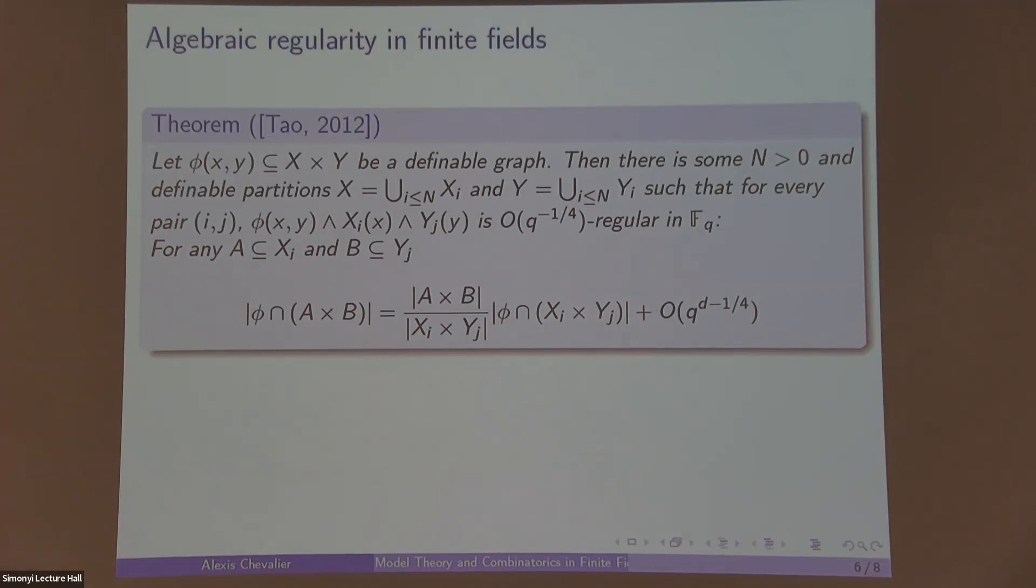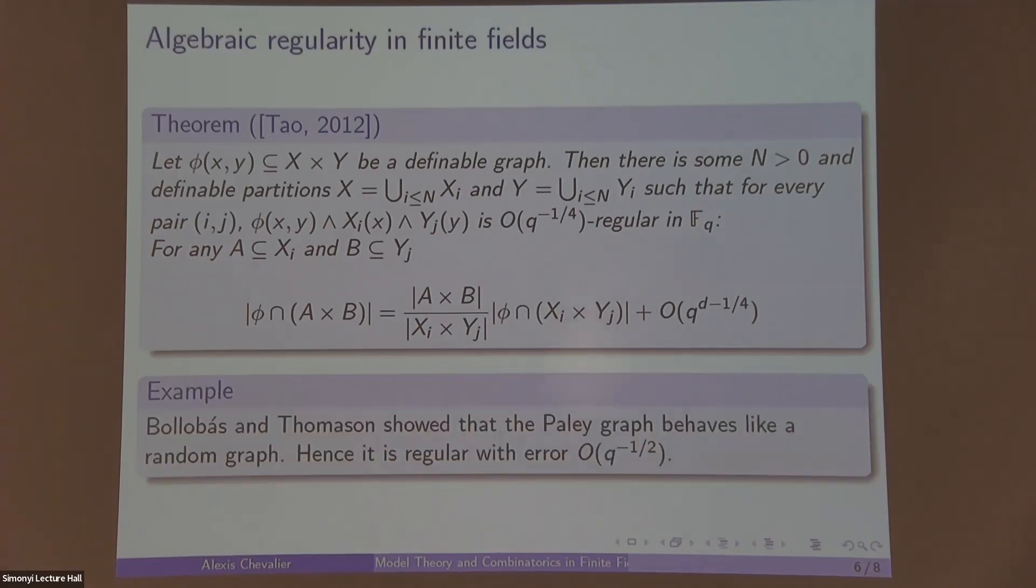Okay, and just to give an example, so this is a classical result of Bolyvas and Thomason, which says that the Paley graph behaves like a random graph. They have very quantitative bounds on the error on randomness. But this says that the Paley graph is regular in the sense of Szemerédi with error q^(-1/2). Note that a half is not a quarter. It's actually an open question to know if we can improve the quarter here. The reason we have a quarter is because in the background there's lots of Cauchy-Schwarz arguments happening.